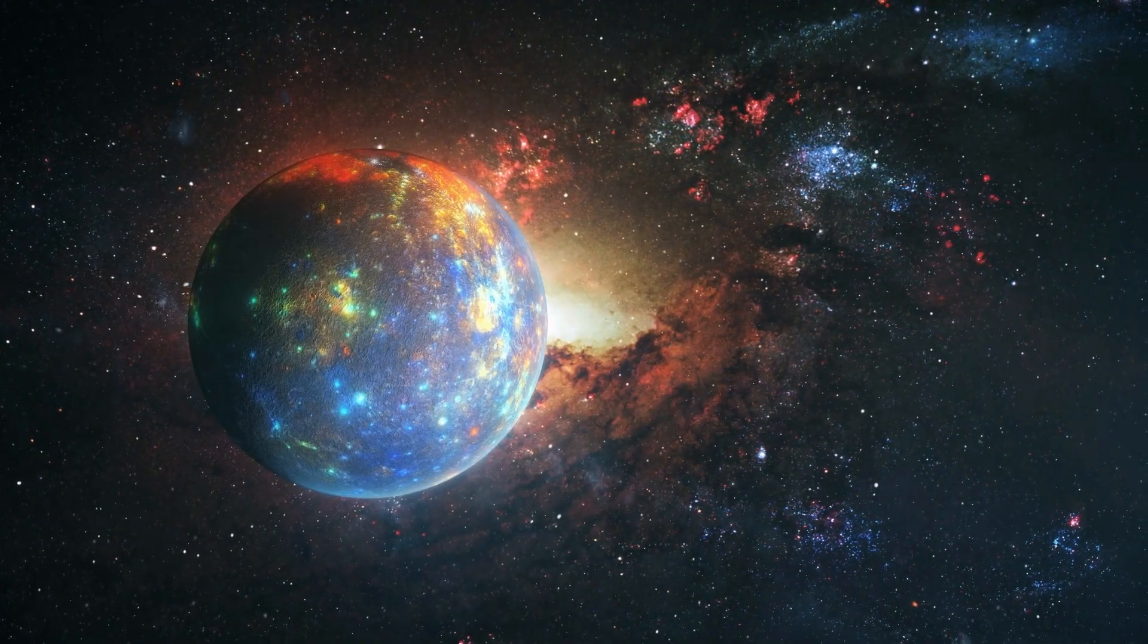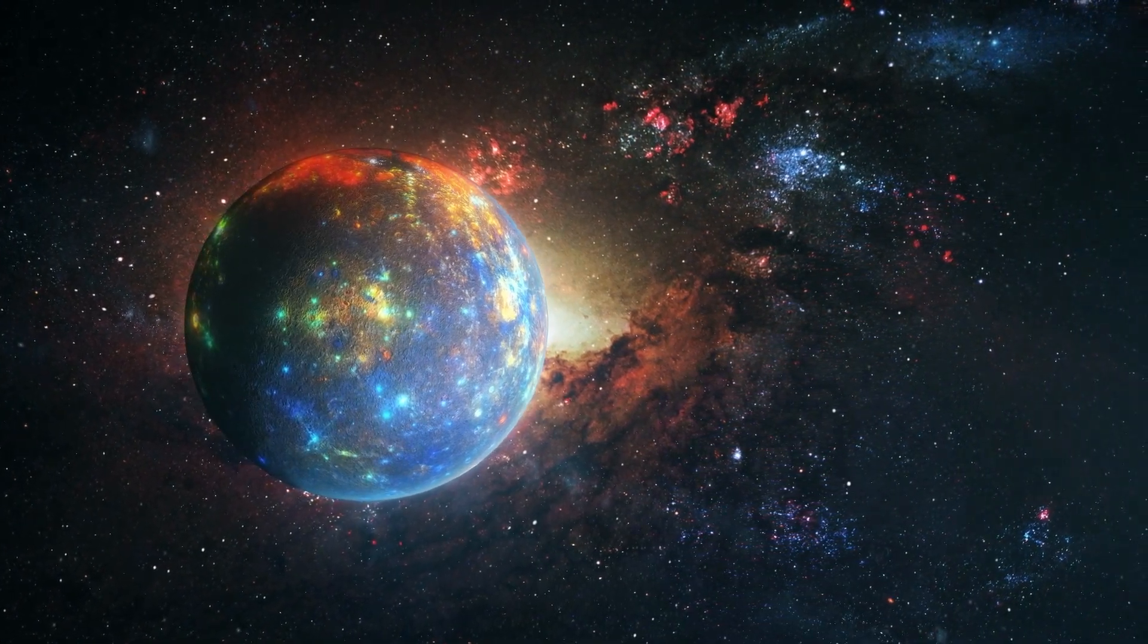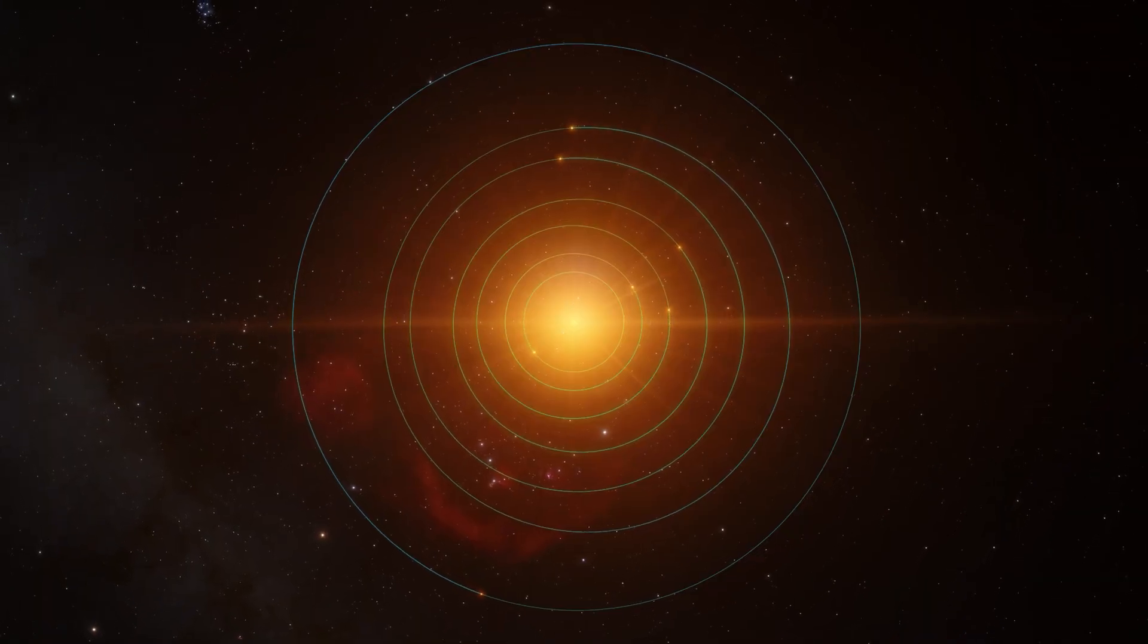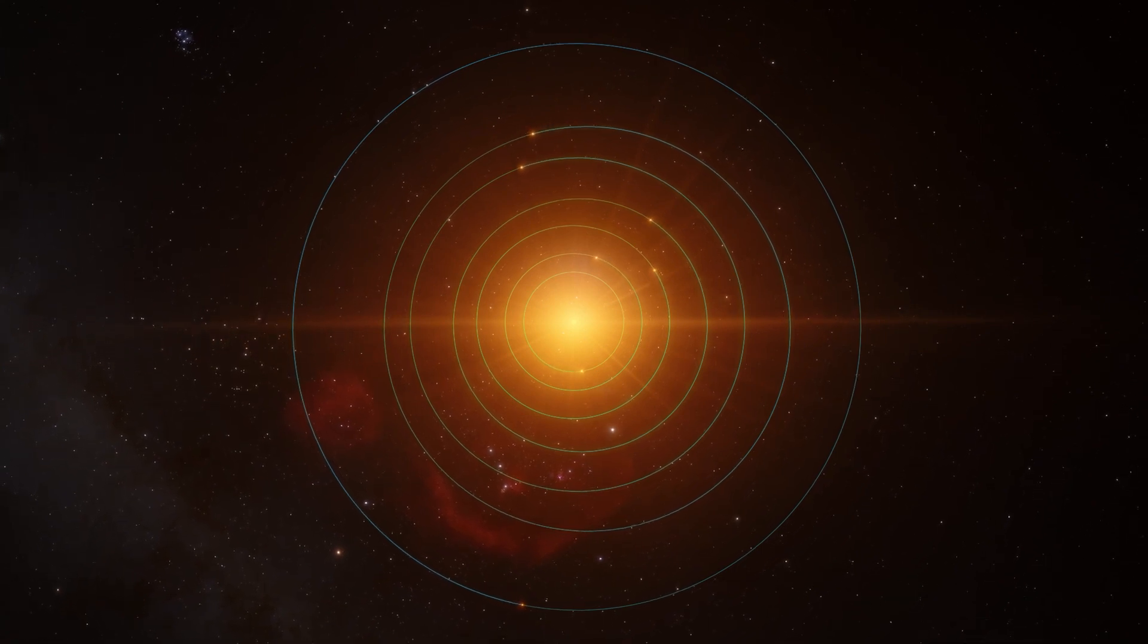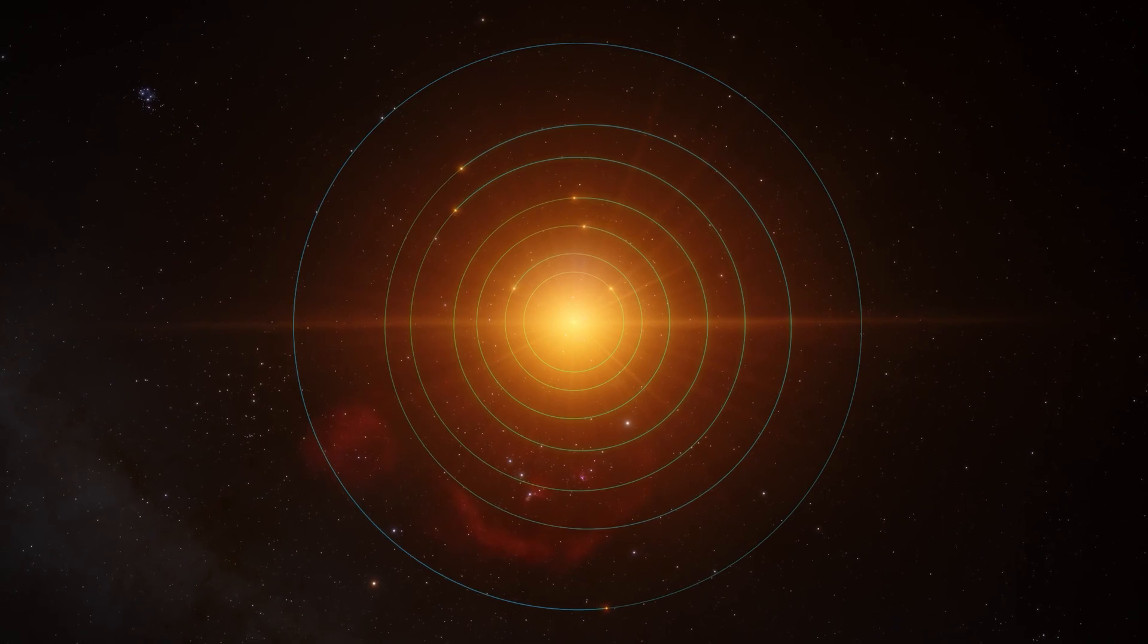Wolf 1069 b is a rocky exoplanet with a mass and size similar to that of Earth. It orbits its star, Wolf 1069, in just 8.1 days, making it much closer to its star than Mercury is to our Sun.